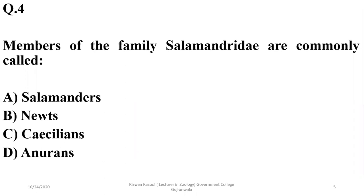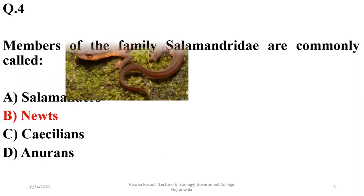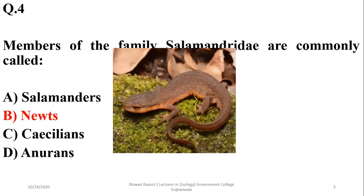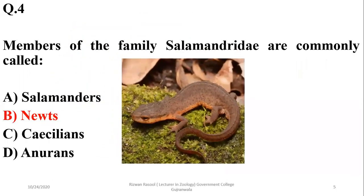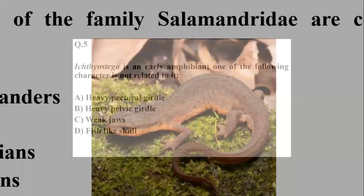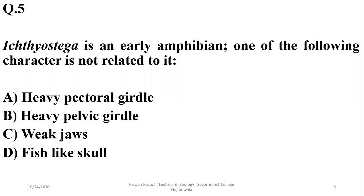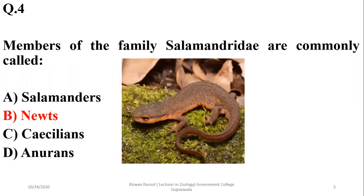Members of the family Salamandridae are commonly called newts. They are commonly observed as newts and salamanders, belonging to the family Salamandridae.